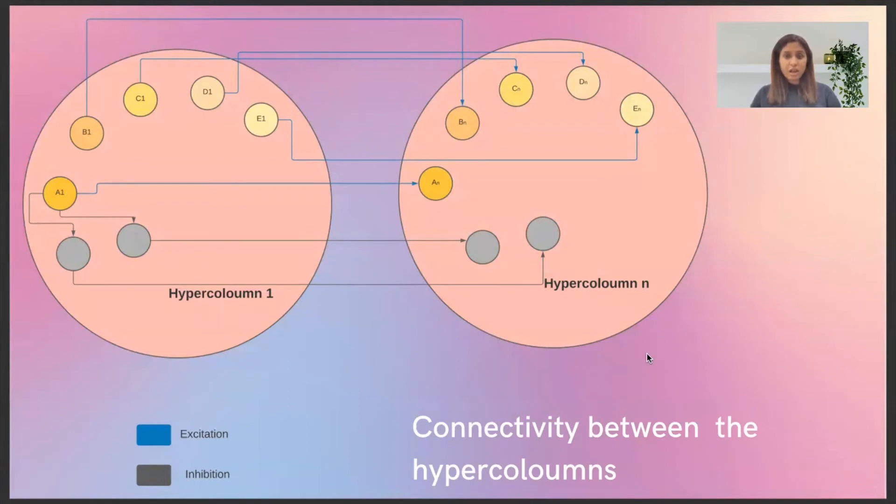You can see how you basically have one connection which is enabled at a time, which is the excitation. And then you have the inhibition, which is the network that's not active at a particular point.